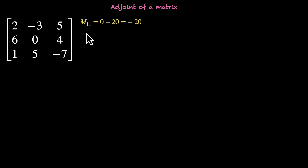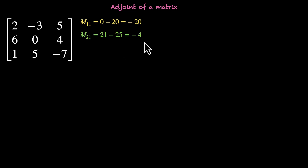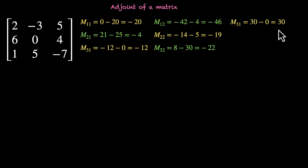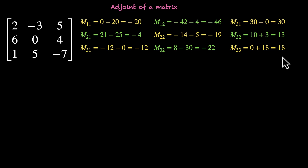Minors M11 to M33 are as follows: M11 is minus 20, M21 is minus 4, M31 is minus 12, M12 is minus 46, M22 is minus 19, M32 is minus 22, M13 is 30, M23 is 13, and M33 is 18.